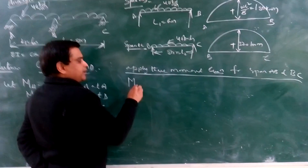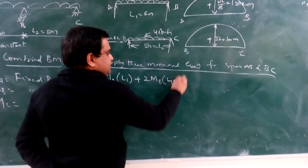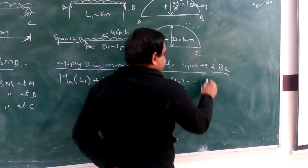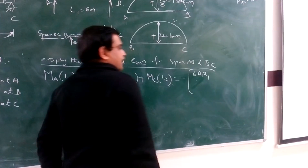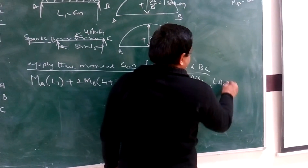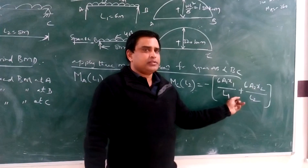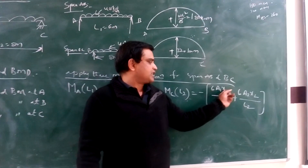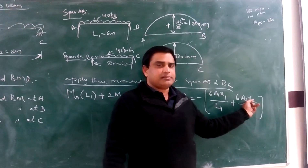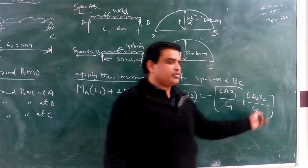The 3-moment equation states: MA·L1 + 2·MB·(L1 + L2) + MC·L2 equals minus 6·(A1·x1/L1 + A2·x2/L2). Here, A1 is the area of the first bending moment diagram, x1 is the centroid distance of the first bending moment diagram from the left support, L1 is the length of the first span, and A2, x2, L2 are the corresponding values for the second span.